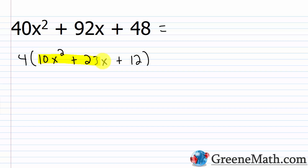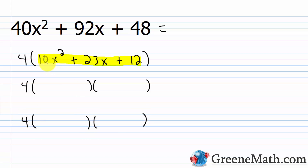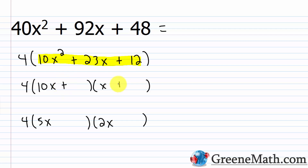Now I just need to factor 10x² + 23x + 12, with the 4 written out front. Since 10 is not prime, 10x² can come from 10x times x or from 5x times 2x — both must be checked. All signs are positive, so all terms in the binomials will be positive. The factors of 12 are: 1 and 12, 2 and 6, and 3 and 4.